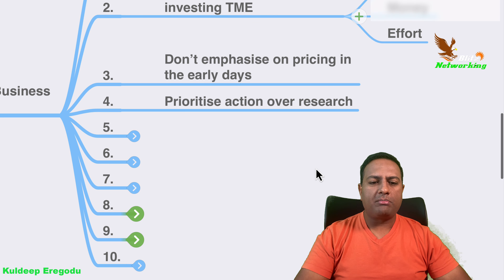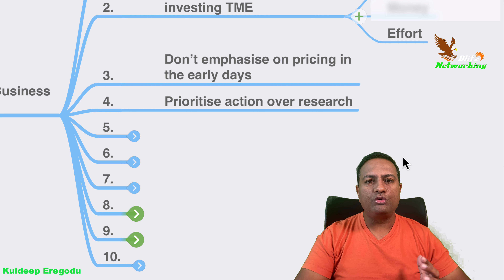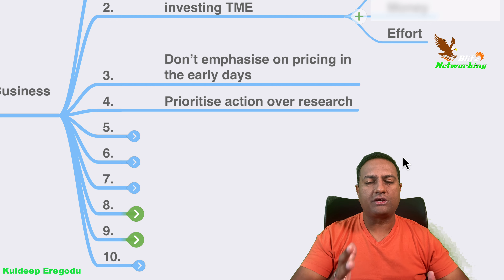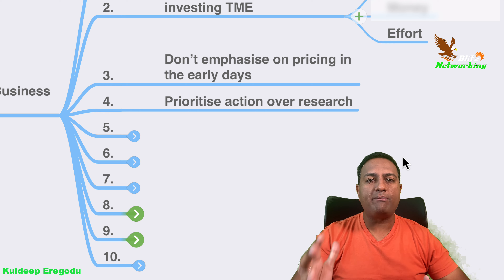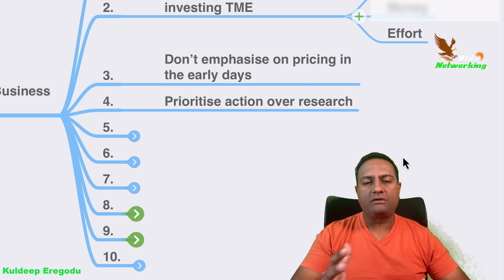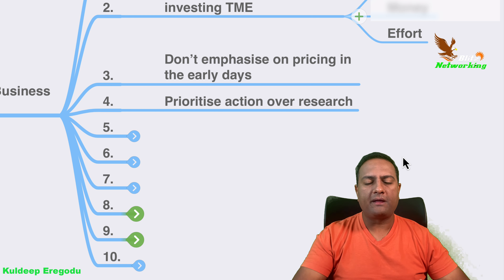Step four: prioritize action over research. You don't need to do a lot of research. Do a small amount of research and then take massive action — grow the business. That is what matters the most. You need to prioritize action over research.